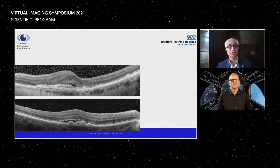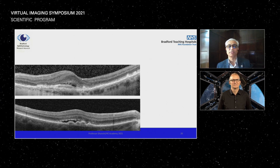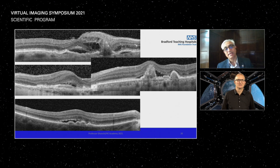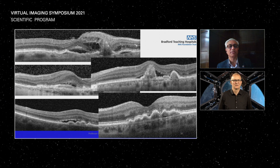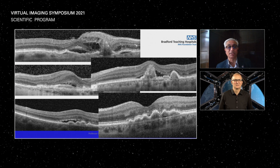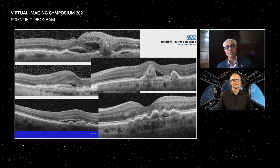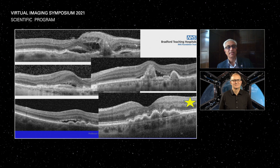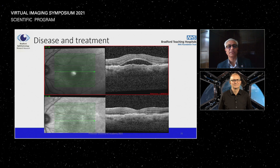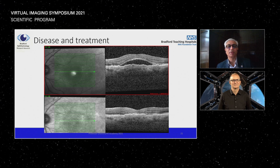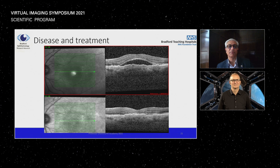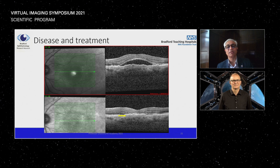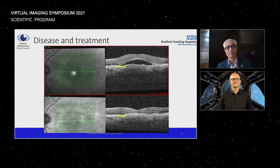A before-and-after treatment example shows fluid increasing then disappearing following injection. Notably, the height of the pigment epithelial detachment increases as disease activity increases. After injection, fluid disappears, but comparing PED height before and after confirms it was higher when disease was active — a useful treatment response marker.